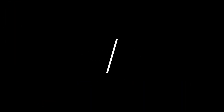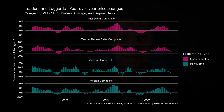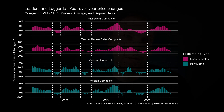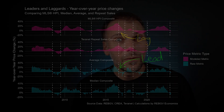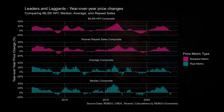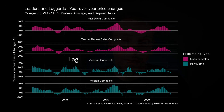Another quirk that gets brought up frequently is that some metrics, such as the MLS HPI, are believed to lag the market relative to other metrics such as the raw average price. Looking at year-over-year price changes, if I draw some lines on this chart marking important turning points in the market, we can see there does seem to be some evidence of a lead-lag relationship. But it's important to note that this lead-lag relationship isn't always consistent — in some cases modeled metrics lag raw metrics, but in other cases they line up almost perfectly.